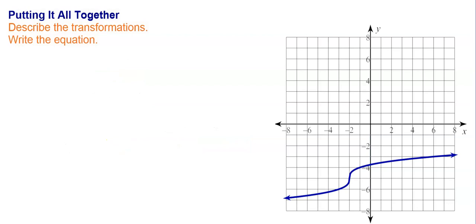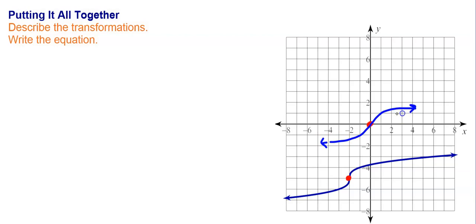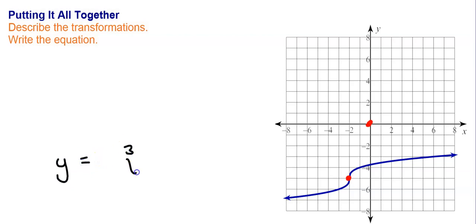Just like with odd-power polynomials, these odd roots — where it's this nice little curve — have a major point to watch: the inflection point, where the curve changes direction. That's what we compare, and we compare it to the origin, because when the index is odd on a radical, you get this curve through the origin, and the origin has that inflection point. I would usually tell you which root you're dealing with — in this case it's the cube root, so y equals the cube root of x.